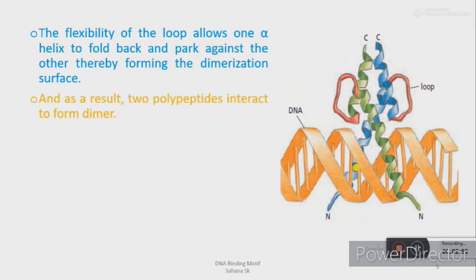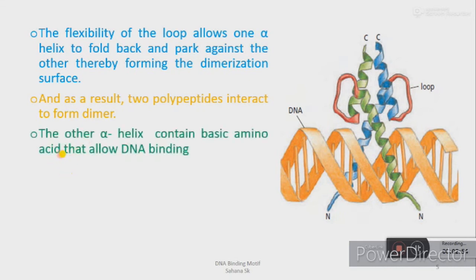As a result, these two polypeptides interact to form a dimer. The other alpha-helix facilitates DNA binding as it contains positively charged amino acids, so it can easily fit into the major groove of the double helix.